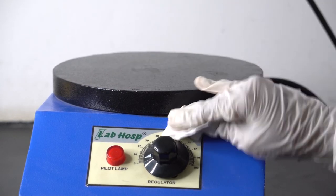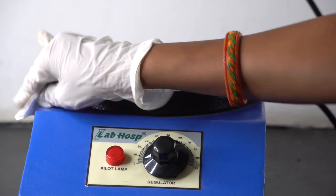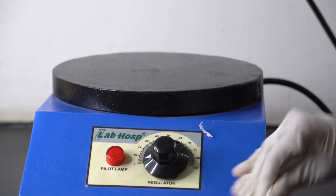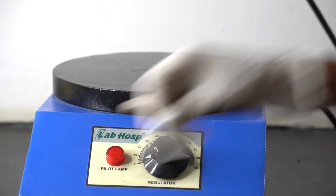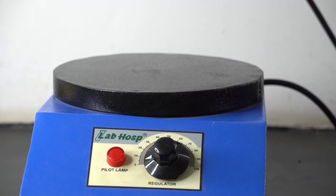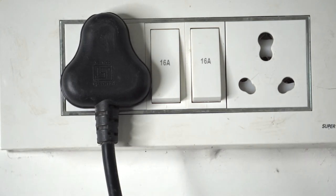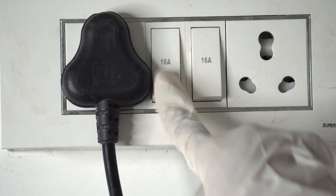Before we begin operation or calibration of the hot plate, we must ensure that the instrument is clean and suitable for use. If not, then clean all parts of the instrument with a clean and dry cloth or tissue paper. After cleaning, switch on the main power supply of the instrument.